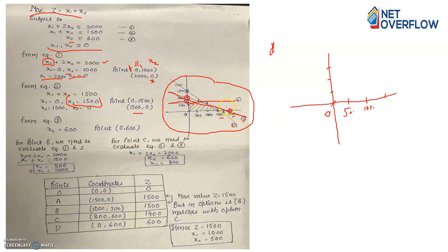Now you need to determine the feasible closed region. To check, put 0 for x1 and x2 in each constraint. For equation 1: 0 ≤ 2000 — true, so shade toward the origin. For equation 2: 0 ≤ 1500 — true. For equation 3: 0 ≤ 600 — true. So you get a bounded feasible region toward the origin.